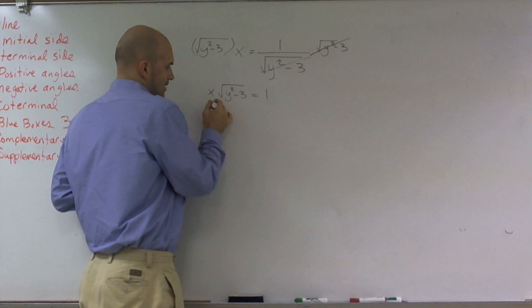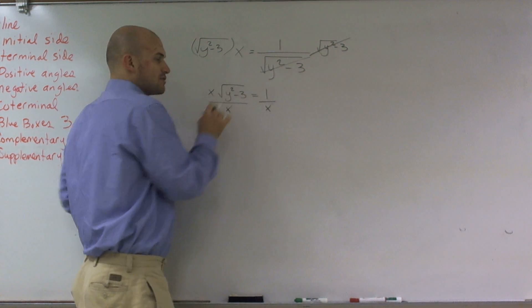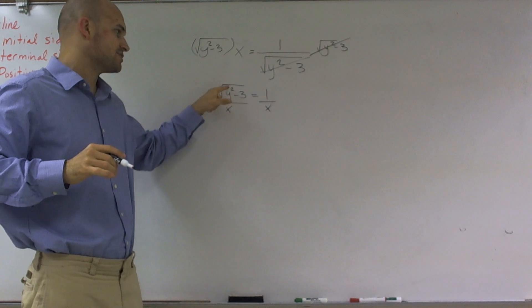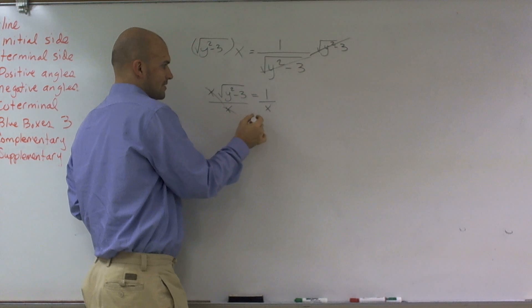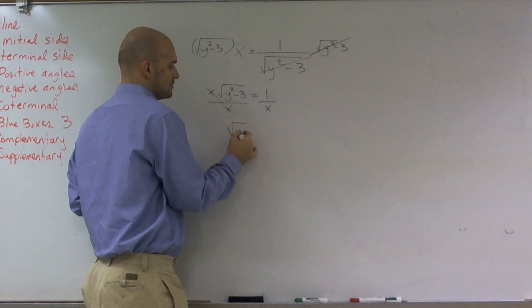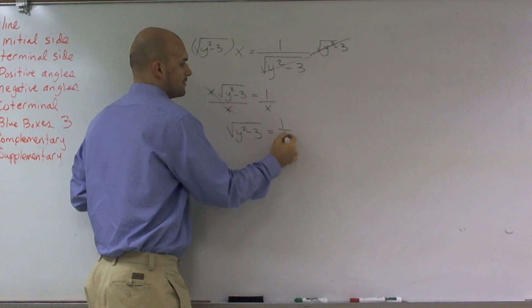Then what I'm going to do is divide by x. Remember, since this is subtraction, you cannot separate the square root into y² and 3. So I'm going to divide by x. Those will cancel out. So I'm left with √(y² - 3) equals 1/x.